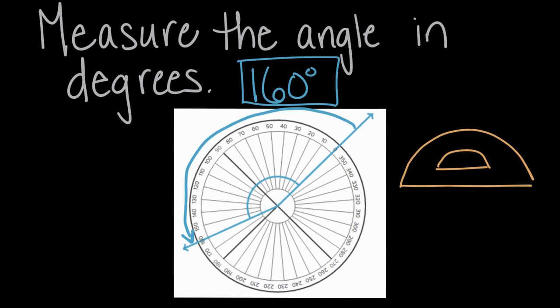And again, when you measure on a circle protractor, or any protractor for that matter, you're gonna line one ray up to the zero, and then measure the opening till you get to the other ray, which in this case opened up to 160 degrees.